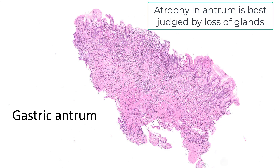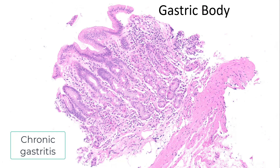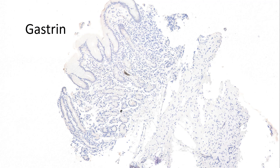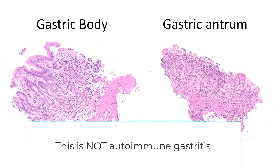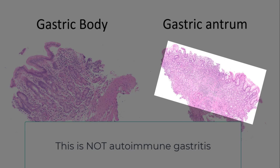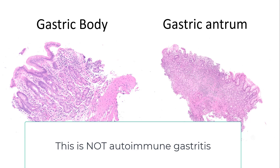There was no intestinal metaplasia here. Here's the body mucosa — again, there's significant gastritis, it goes superficial and also deep. This was negative for H. pylori gastritis. The gastrin stain was entirely negative, confirming this is from the gastric body. So the question is: is this autoimmune gastritis? And it is not. One reason is because you have a very diseased antrum — perhaps there's some atrophy in addition to chronic gastritis. The body clearly shows chronic gastritis, but it does not show neuroendocrine cell hyperplasia. Therefore, this is not autoimmune gastritis.